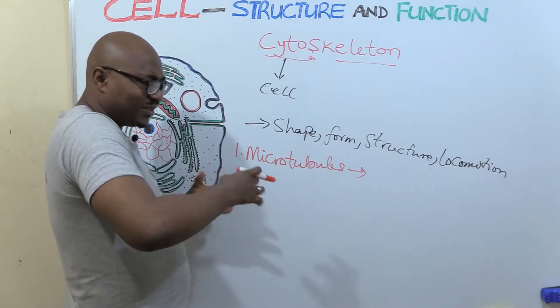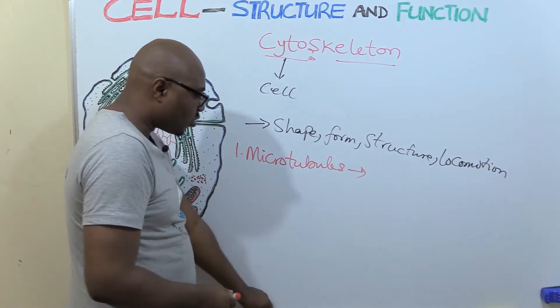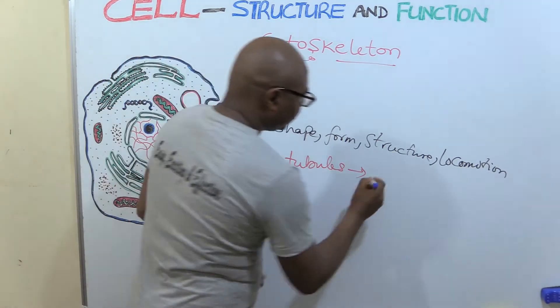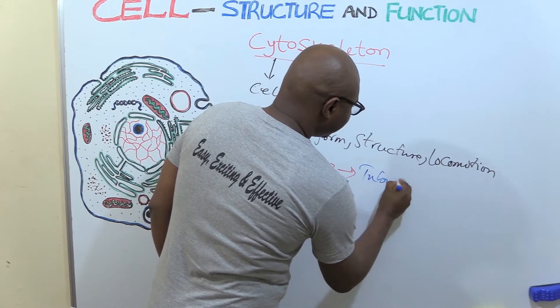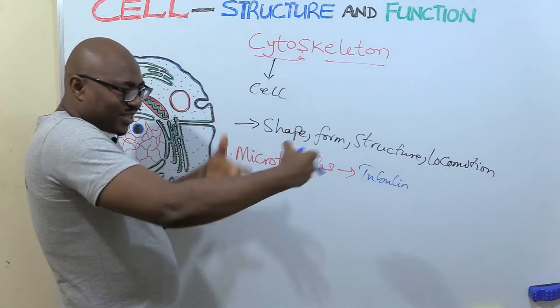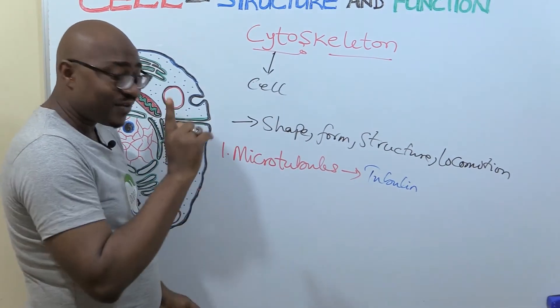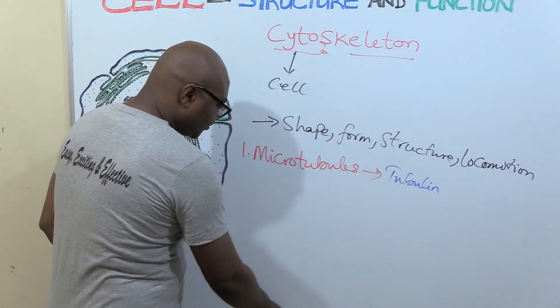They form a tube, the protein that makes a microtubule is called tubulin. So the way it forms, it forms a hollow shape. But that hollow shape is very important for something.